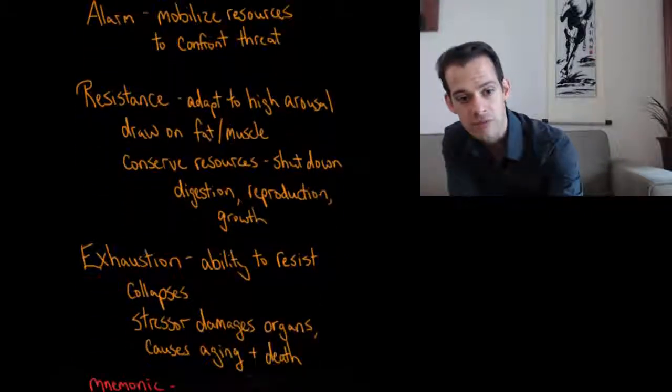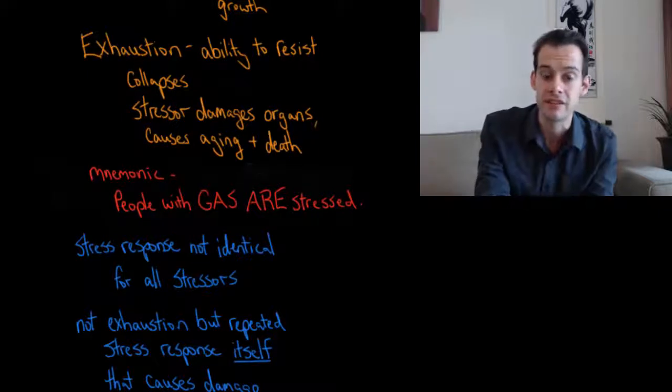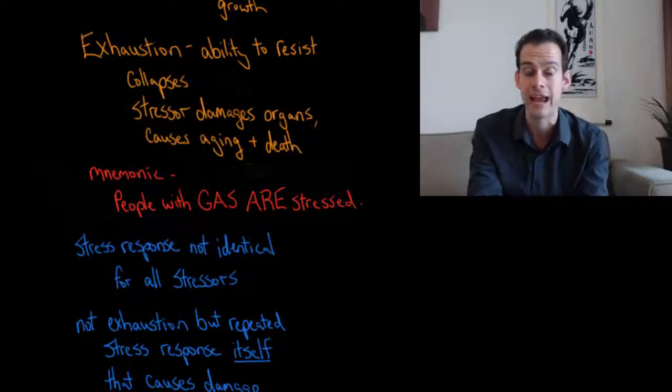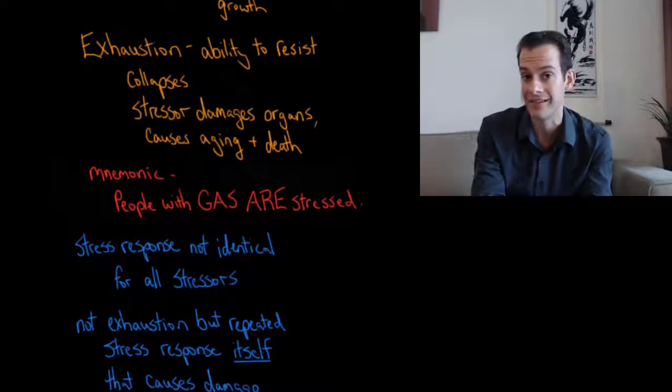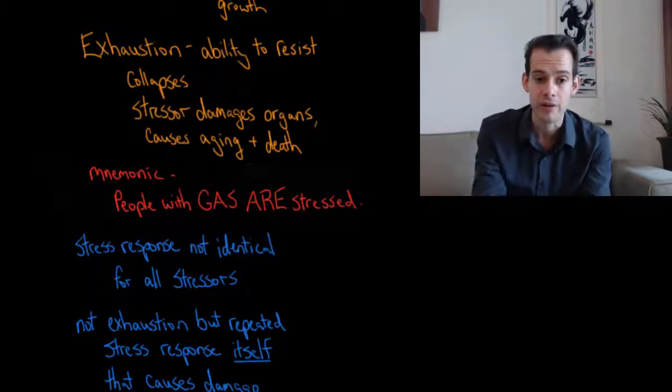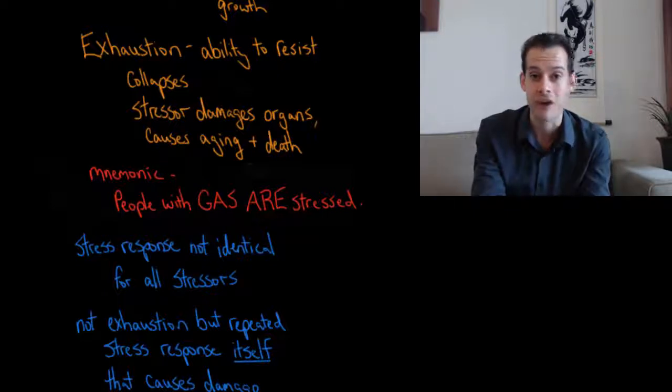And then if the stressor continues beyond this point, he thought eventually the organism will reach the stage of exhaustion. This is where the ability to resist completely collapses. The organism can no longer confront the threat or the stressor. And the stressor now damages organs and causes aging and potentially death.